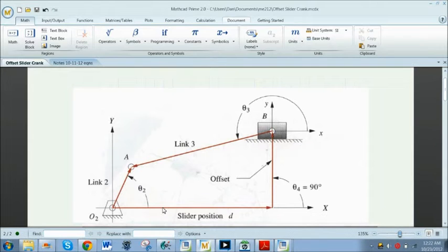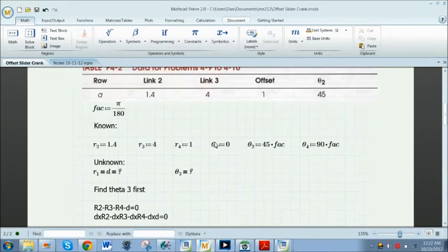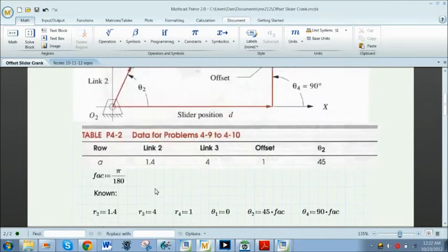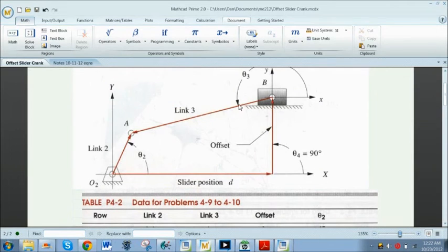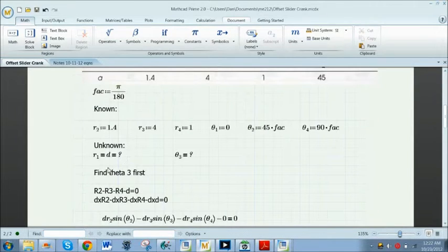In previous episodes we've talked about how to eliminate an angle measure using the dot product. Here we're going to use the cross product to eliminate the length D. I take my vector loop equation R2 minus R3 minus R4 minus D equals zero. You can see that clearly if I just follow that path with my mouse I end up back where I started from.